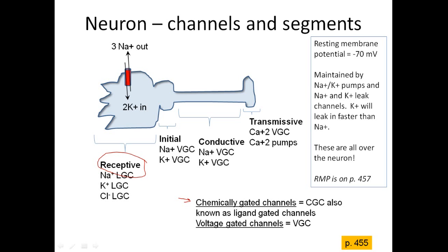The initial segment is at the axon hillock, and that's where the information is going to be summed up — we decide whether the neural impulse is going to be sent or not. At the initial segment we have sodium and potassium voltage-gated channels, called VGCs. VGCs open when the electrical charge reaches a certain set point.